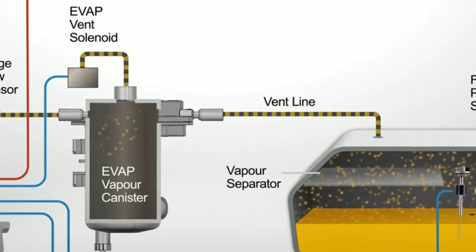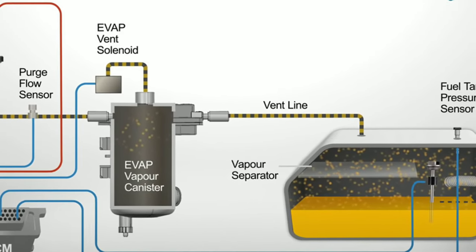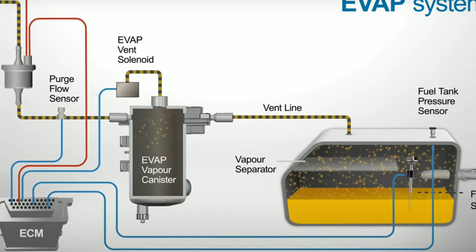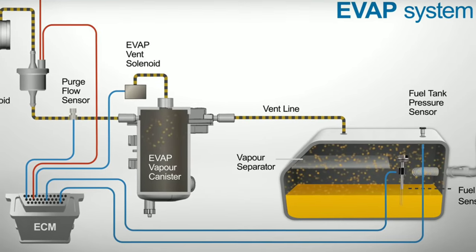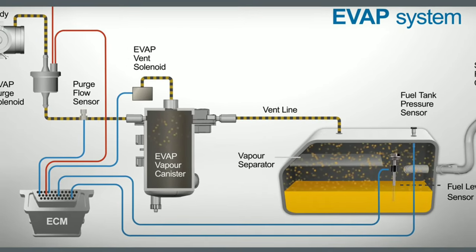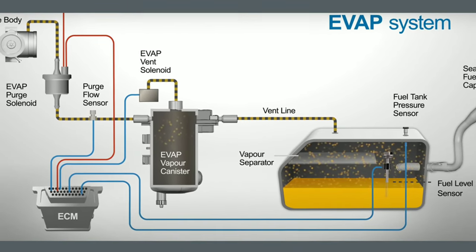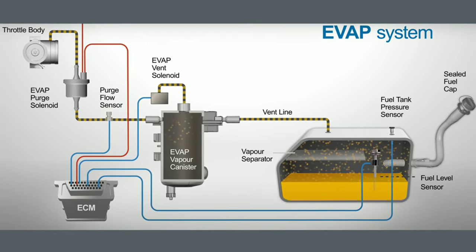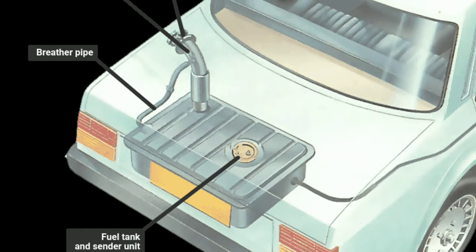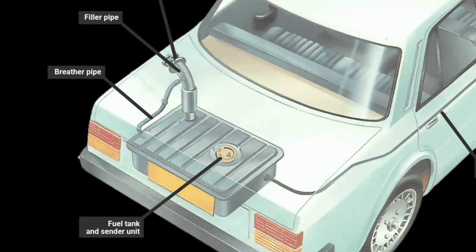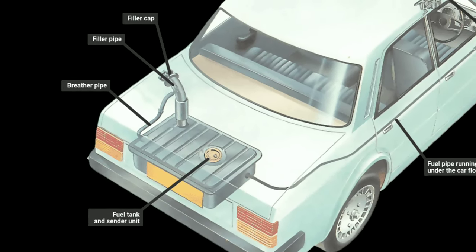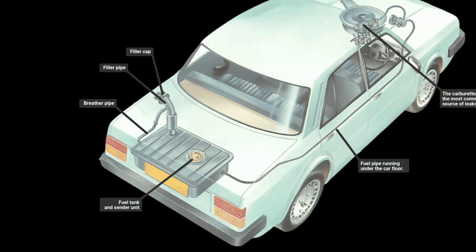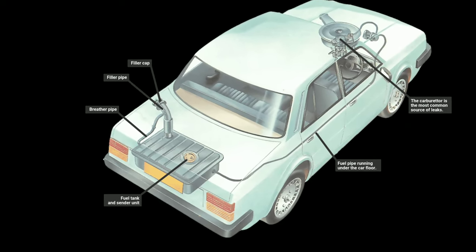The EVAP system is made up of different components that work as an integrated system to catch and store vaporized fuel. One of these parts is the fuel tank, which is the most crucial component of the EVAP system because it keeps the fuel for the engine.